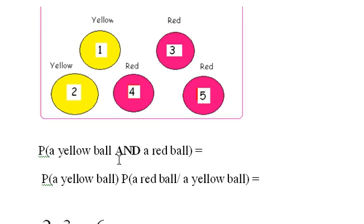The probability of a yellow ball and a red ball equals the probability of a yellow ball times the probability of a red ball, given that we've already drawn a yellow ball out.